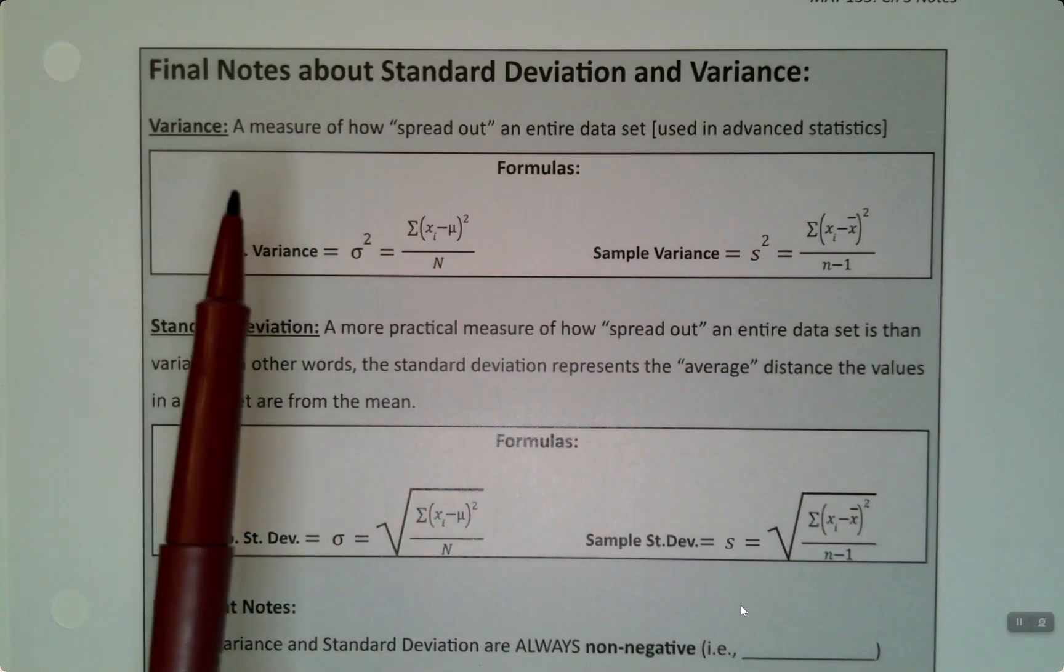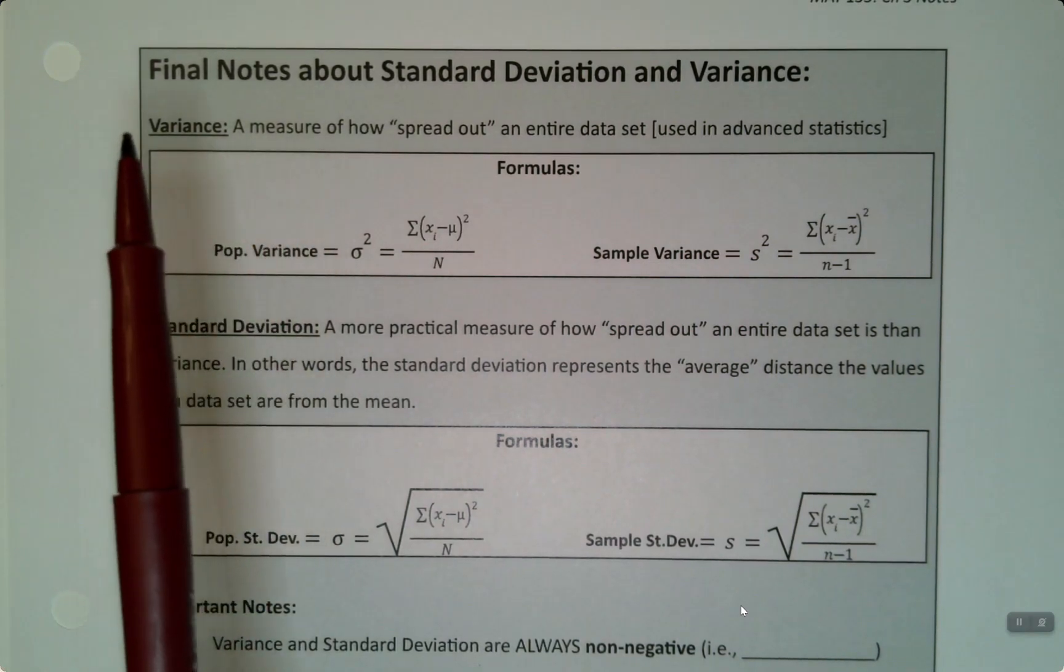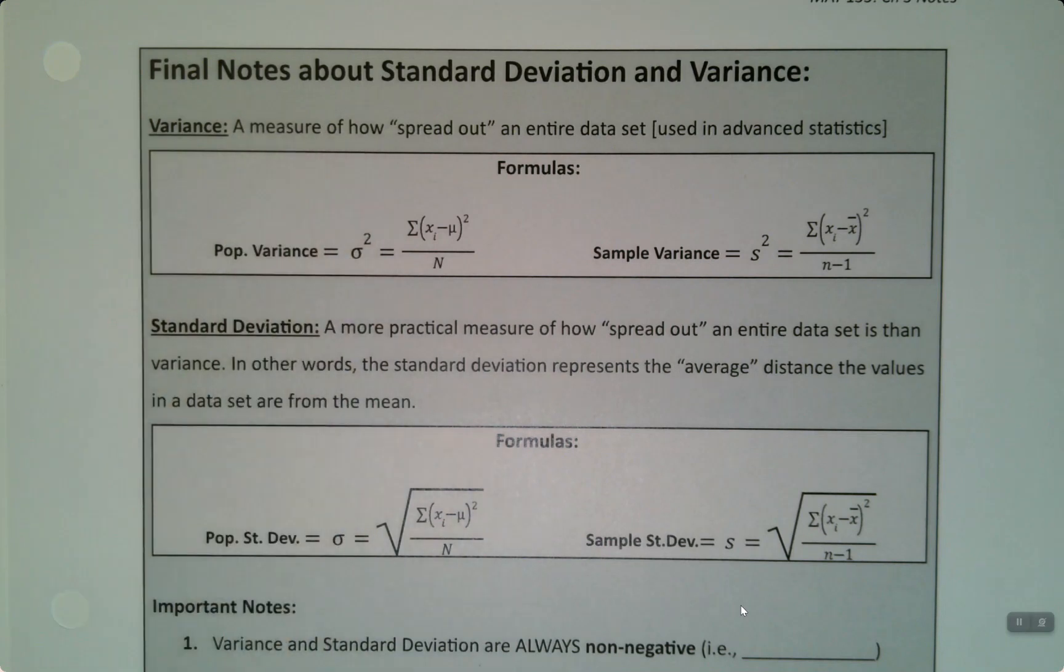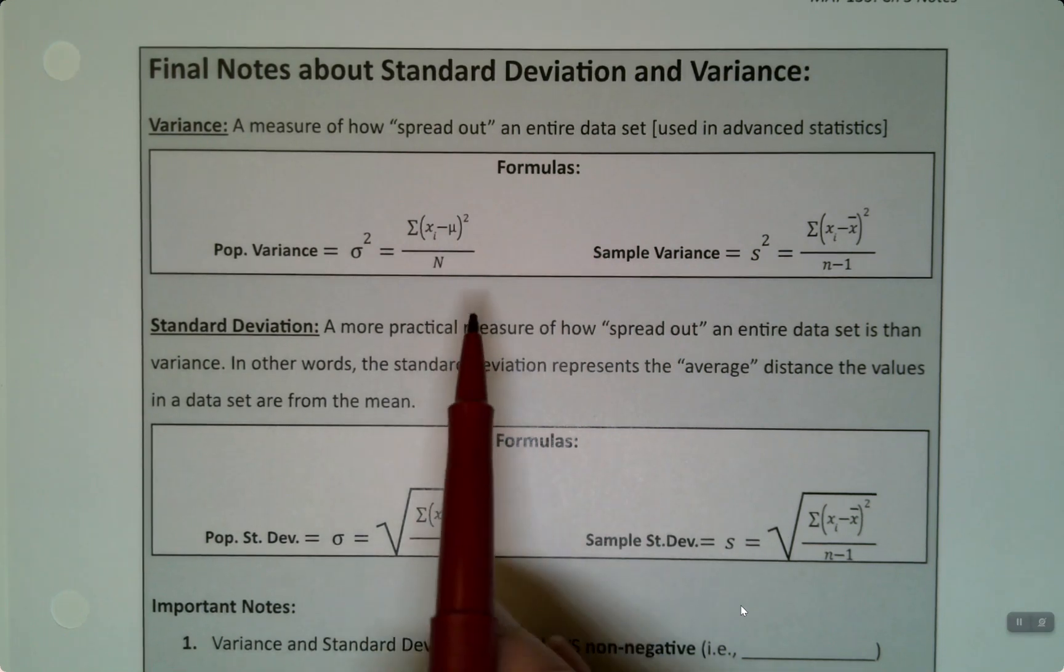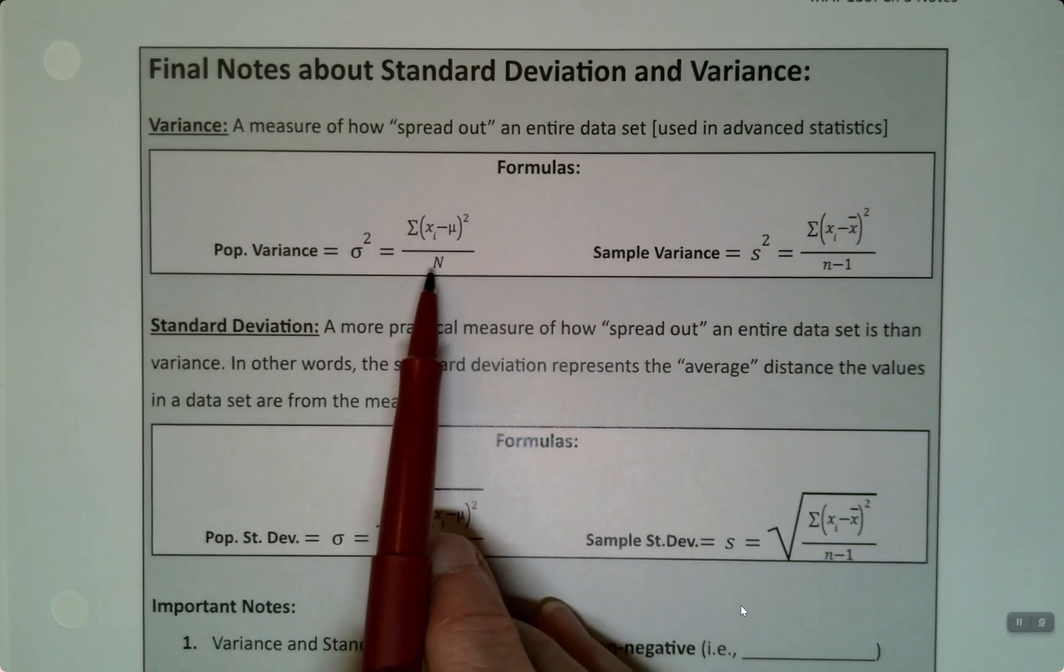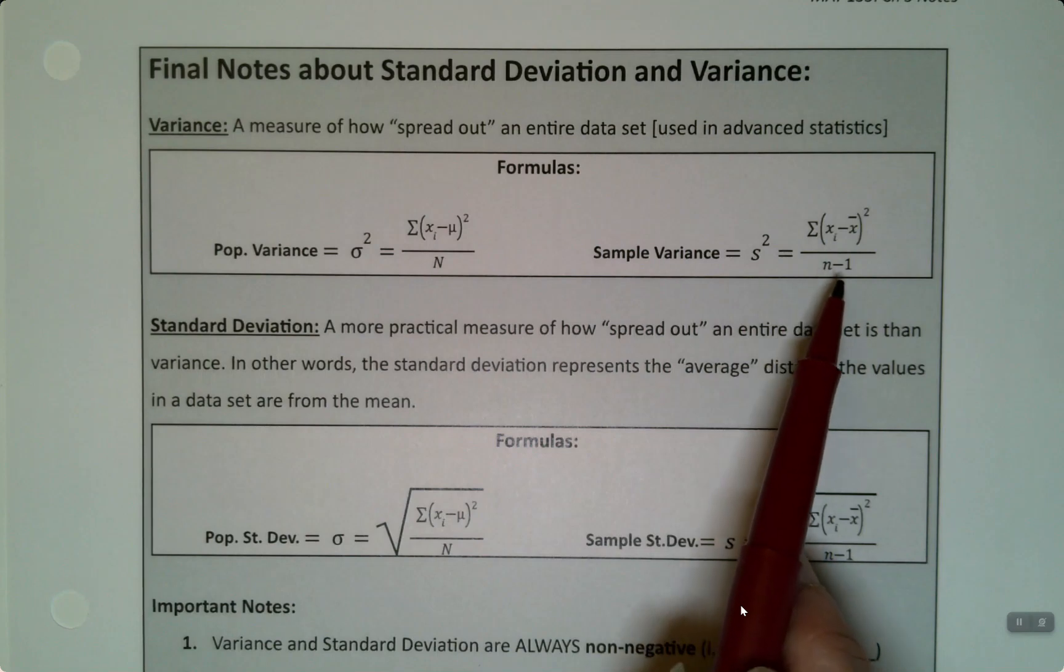So variance and standard deviation. Variance we don't use very much, but it is a measure of how spread out the data set is, and it's used in more advanced statistics. Remember that down here we're dividing by capital N, and here we're dividing by n minus 1.